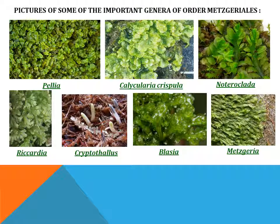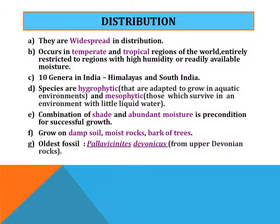Here are some pictures of genera of order Metzgeriales, like Pellia, Blasia, Riccardia, Cryptothallus, etc. Moving on to the distribution: they are widespread and occur in temperate and tropical regions of the world. They are entirely restricted to regions with high humidity or readily available moisture.